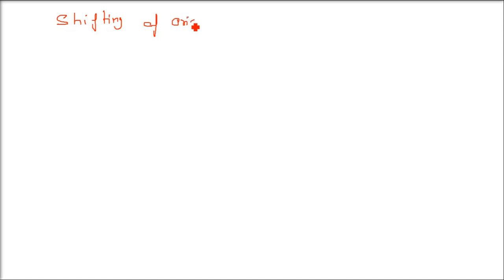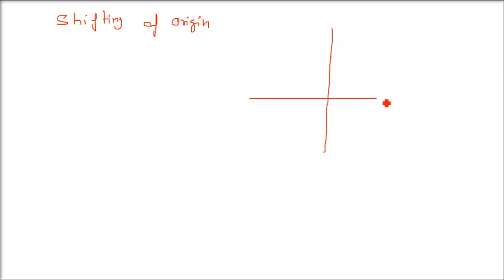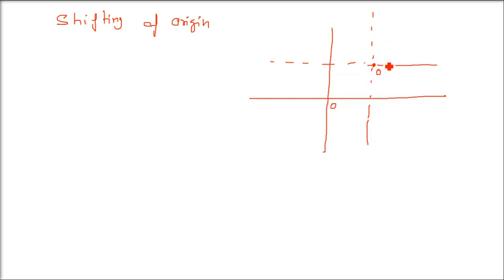Shifting of origin. This means that we have a Cartesian coordinate system. You are shifting this Cartesian coordinate system — the origin O, which is the intersection point at (0,0), you now try to shift it to O dash. We are moving this coordinate axis to another position. The dotted line represents the new coordinate system. We have shifted it.